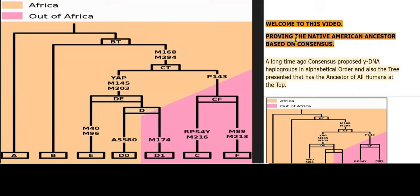Welcome to this video. Proving the Native American ancestor based on consensus. A long time ago, consensus proposed Y-DNA haplogroups in alphabetical order, and also the tree presented has the ancestor of all humans at the top. Our approach in this video will be clinical and only based on science.